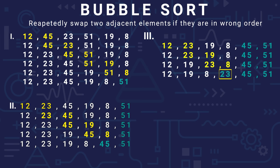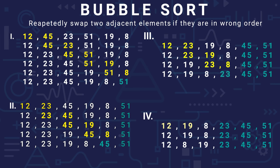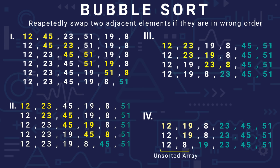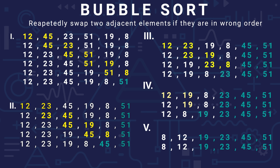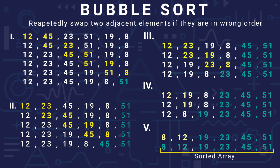In the fourth iteration, we compare 12 and 19 — right order. We continue comparisons and swap where needed. The unsorted portion keeps shrinking. In the fifth iteration, we compare 12 and 8 — after swapping, we have seen that in the final iteration we get our fully sorted array.